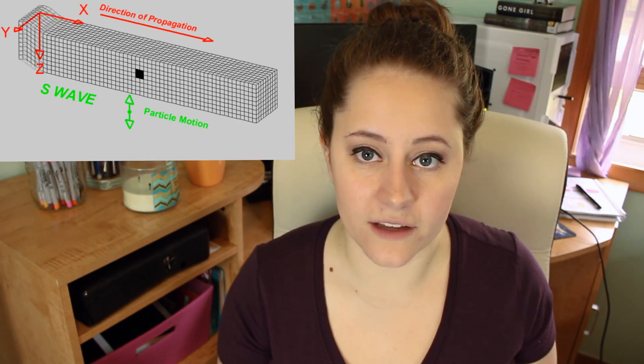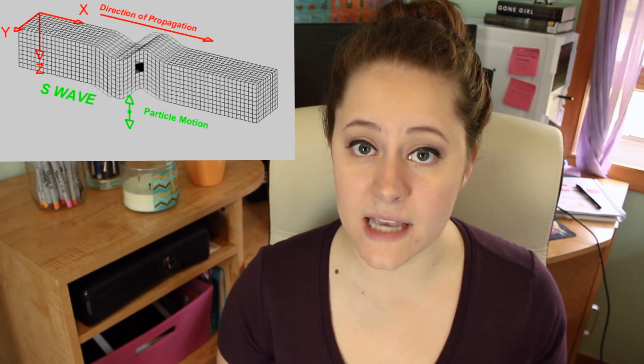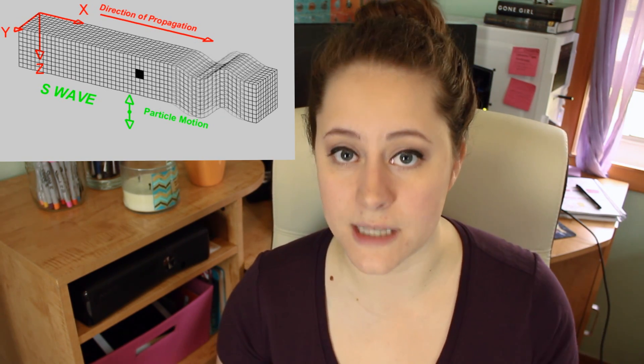Secondary waves are slower and typically arrive on the scene second. These waves have an up and down or side to side motion. Looking at our slinky again, when you shake it back and forth or up and down, that's the motion of a secondary wave — or here's a nice, professional, labeled version. Unlike P waves, S waves will only travel through solids. So if this wave meets a body of water, say an ocean, it won't travel through it.